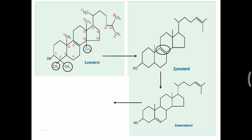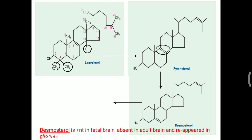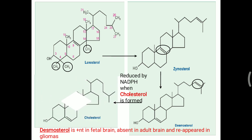Desmosterol is clinically significant — it is present in the fetal brain but not in the adult brain. It reappears in the brain in cases of gliomas (brain tumors). Desmosterol also has a double bond in its 8-carbon side chain, which is reduced by NADPH to finally generate the cholesterol molecule. This is how cholesterol is synthesized, with all its carbons derived from acetyl-CoA.